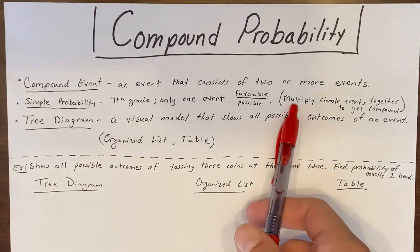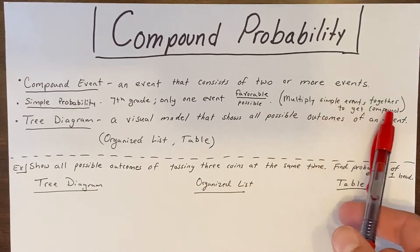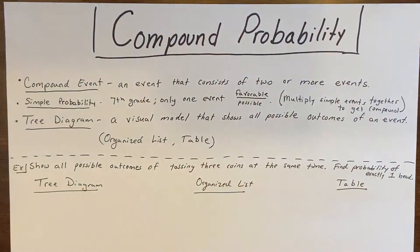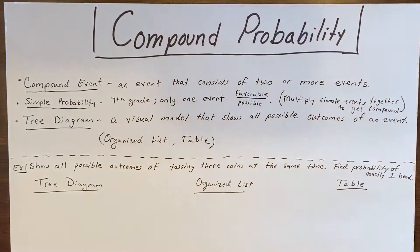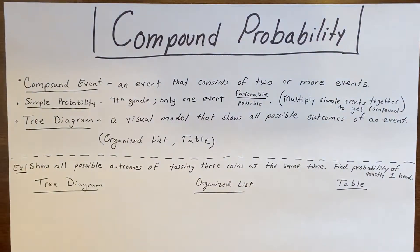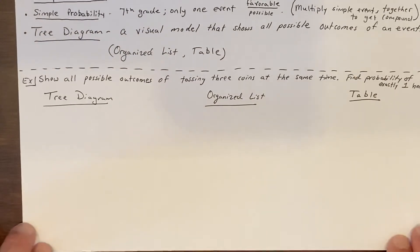One thing to note is that when we multiply simple events together, that gives us the compound probability. For example, if I roll two dice and want the probability of rolling a three and then a four — the probability of rolling a three is one out of six, and the probability of rolling a four is also one out of six. Multiplying those together gives one over 36. We'll look at these three diagram types and then work through some examples.